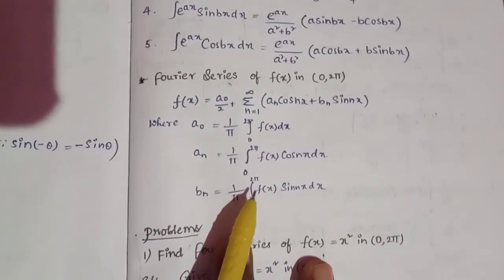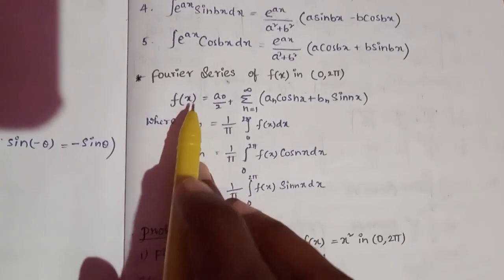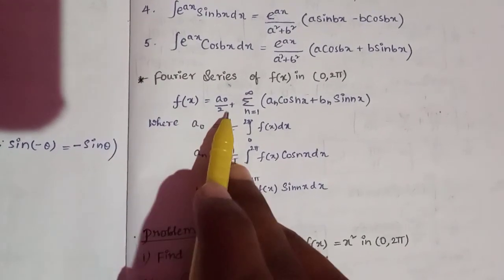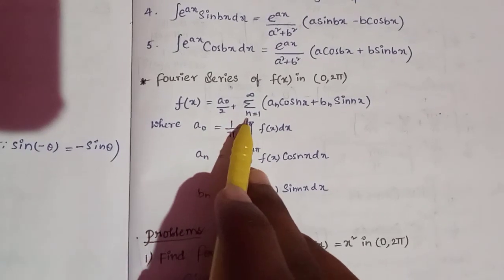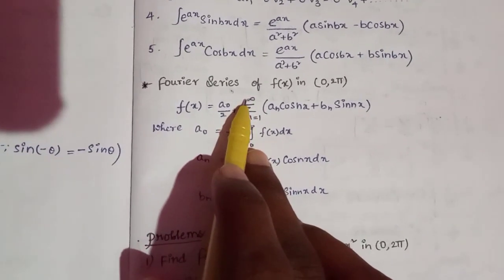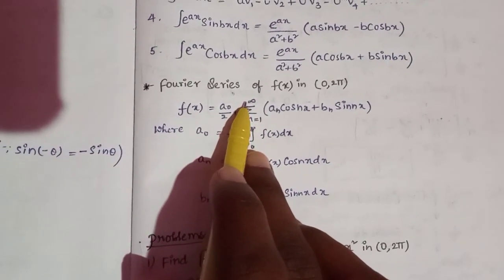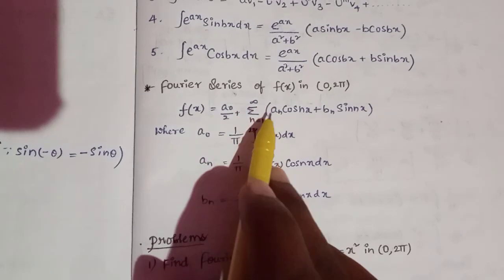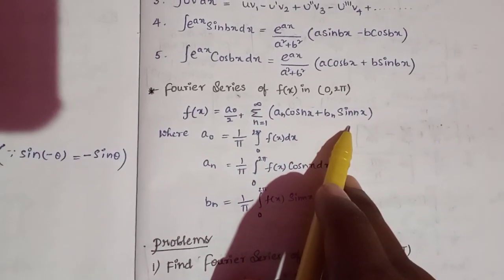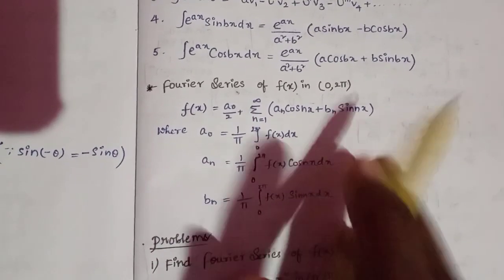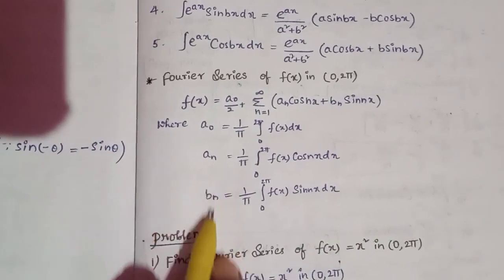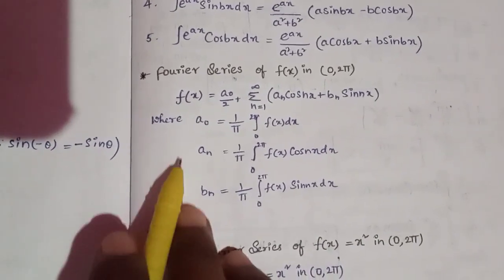First of all, we have a formula. f(x) is equal to a-naught by 2, plus summation n equals 1 to infinity of a_n cos(nx) plus b_n sin(nx). This is the formula. So you will find a-naught, a_n, b_n as coefficients.